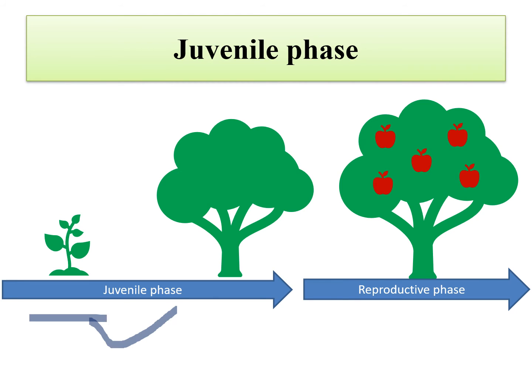When the plant completes the juvenile phase, the reproductive phase begins and the plant is able to produce flowers and fruits. This juvenile phase varies from species to species — in some species it is very short, while in higher woody plants it may take about 20 years to complete. Even when other factors like proper photoperiod and temperature are suitable, the plant cannot produce flowers until the juvenile phase is complete.